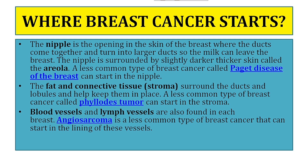Paget's disease of the breast is a less common type of breast cancer that can seem to start in the nipples. Phyllodes tumors are a less common type of breast cancer that affects the stroma — that is, the fat and connective tissues collectively called the stroma. Angiosarcoma is a less common type of breast cancer which starts in the lining of blood vessels and lymph vessels present in the breast.